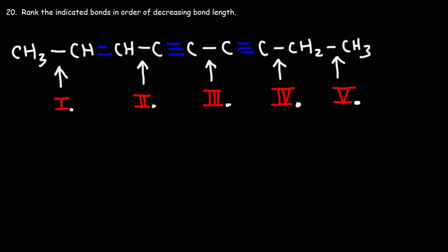Well, let's go back to our example with ethane and acetylene. So ethane has a carbon-carbon single bond. Acetylene has a carbon-carbon triple bond. And we know triple bonds are shorter than single bonds.